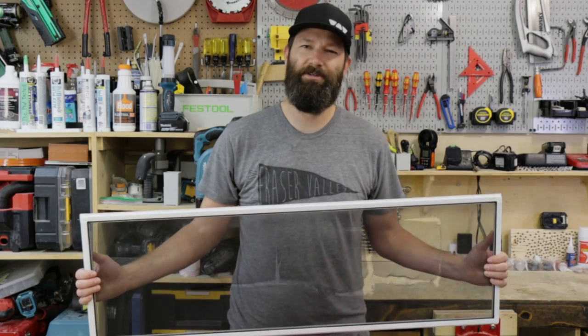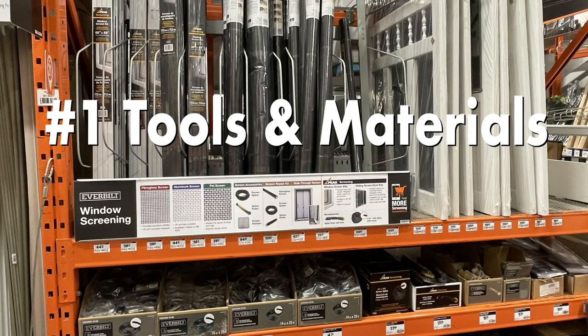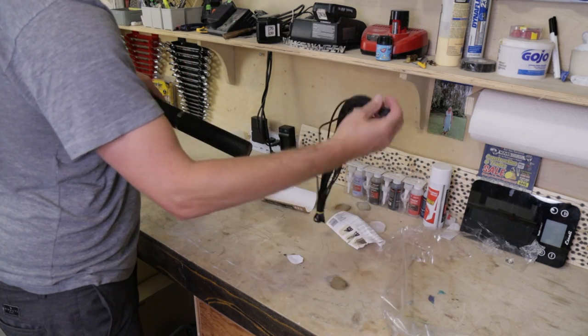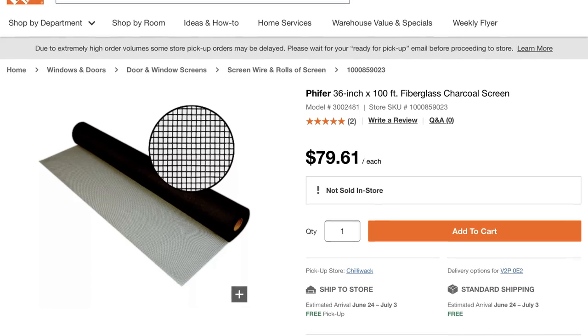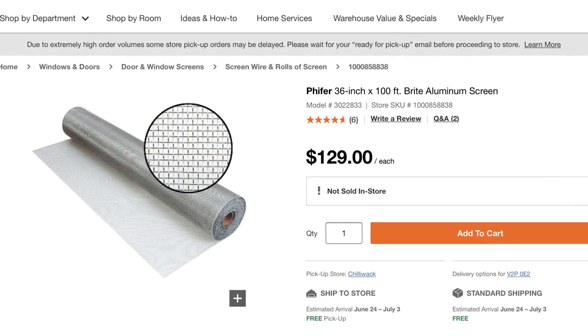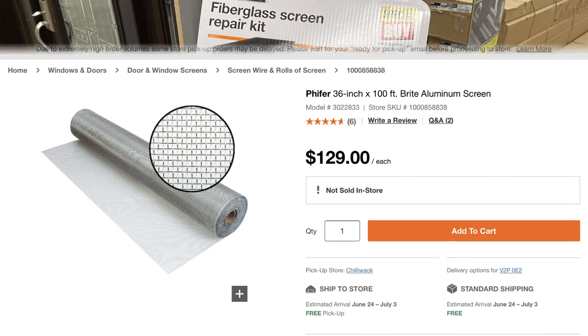I'm gonna share with you the five simple steps to fix your screen. For materials, you're gonna need some new screen and some spline. If it's your first time repairing screens, I recommend you go with fiberglass over aluminum. It's a lot easier to work with fiberglass and it's a bit cheaper as well.